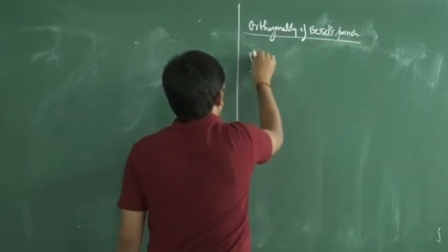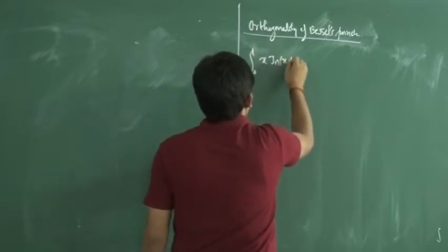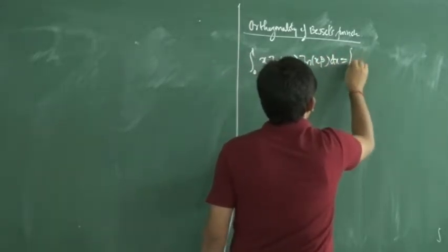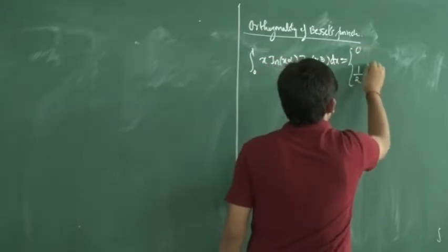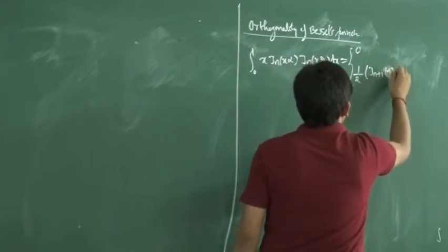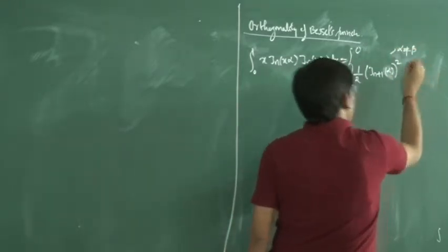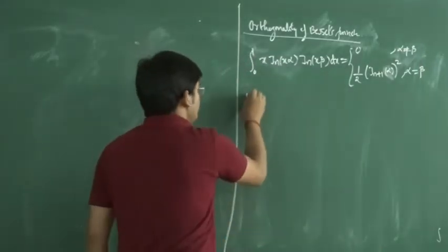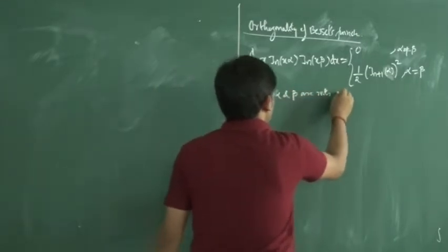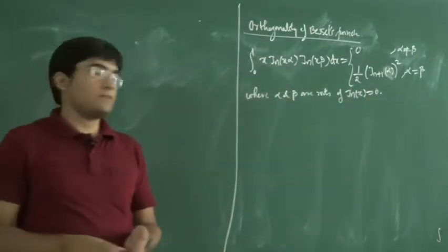The statement is: the value of the integral from 0 to 1 of x · Jn(xα) · Jn(xβ) dx is equal to either 0 when α ≠ β, or (1/2)[Jn+1(α)]² when α = β, where α and β are roots of the Bessel differential equation.